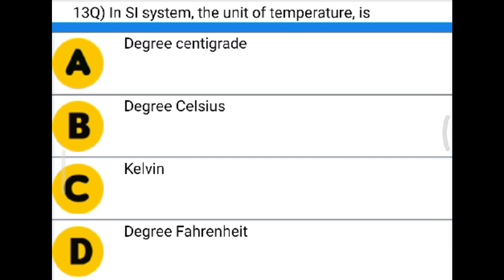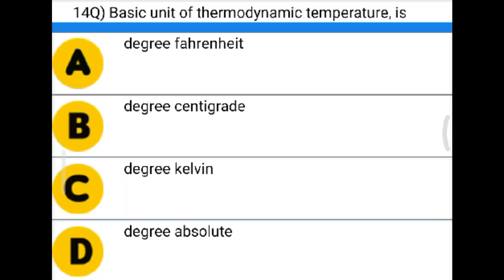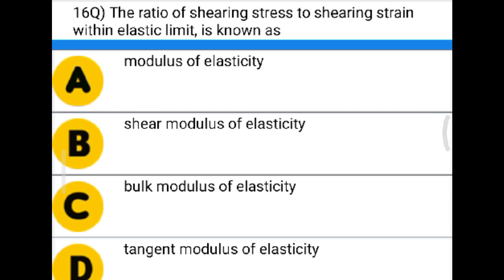Next question: In SI system the unit of temperature is — option A: degree centigrade, option B: degree Celsius, option C: Kelvin, option D: degree Fahrenheit. The correct answer is option C: Kelvin.